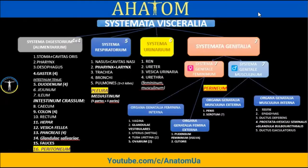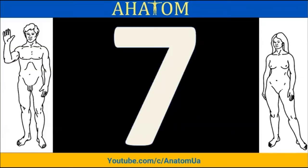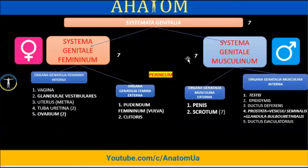Totally, visceral organs or splanchnology includes the alimentary or digestive system, respiratory system, and urinary system. Today is the last part — the genital systems, specifically the male genital system. The number seven is significant here: both male and female genital systems have a total of seven organs or structures.